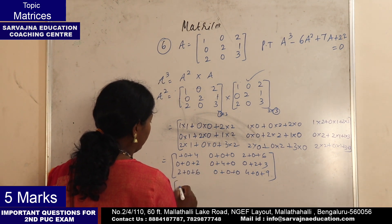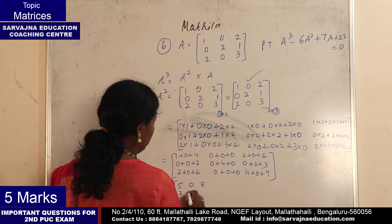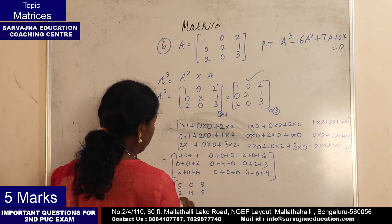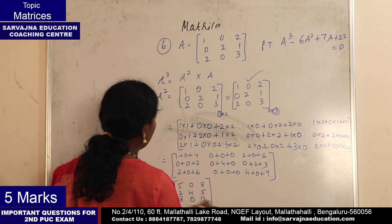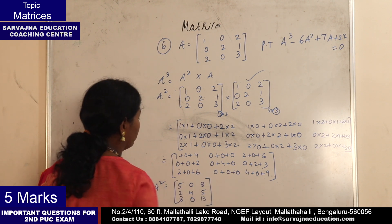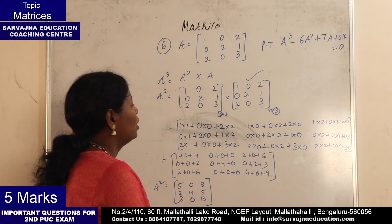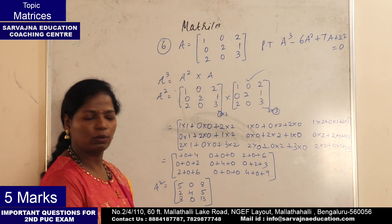So A square equals: 5, 0, 8 (first row); 2, 4, 5 (second row); 8, 0, 13 (third row). Done - I got A square. But I have to multiply this with A to get A cube. A cube is equal to A square into A.